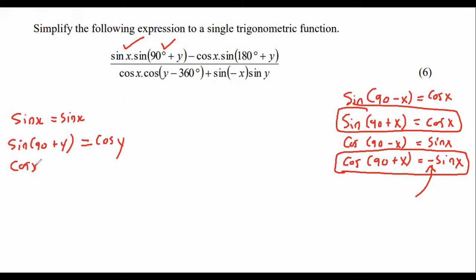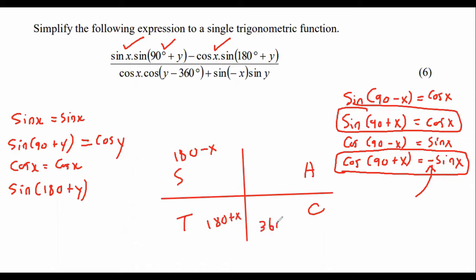Cos x is just going to stay cos x. That's this part here. Sin of 180 plus y. Well, that would be based upon our CAST diagram. We know that there is the C, A, S, and T. You get 180 minus, 180 plus, and 360 minus. So we know that the 180 plus is on the CAST diagram. So that's a good thing.